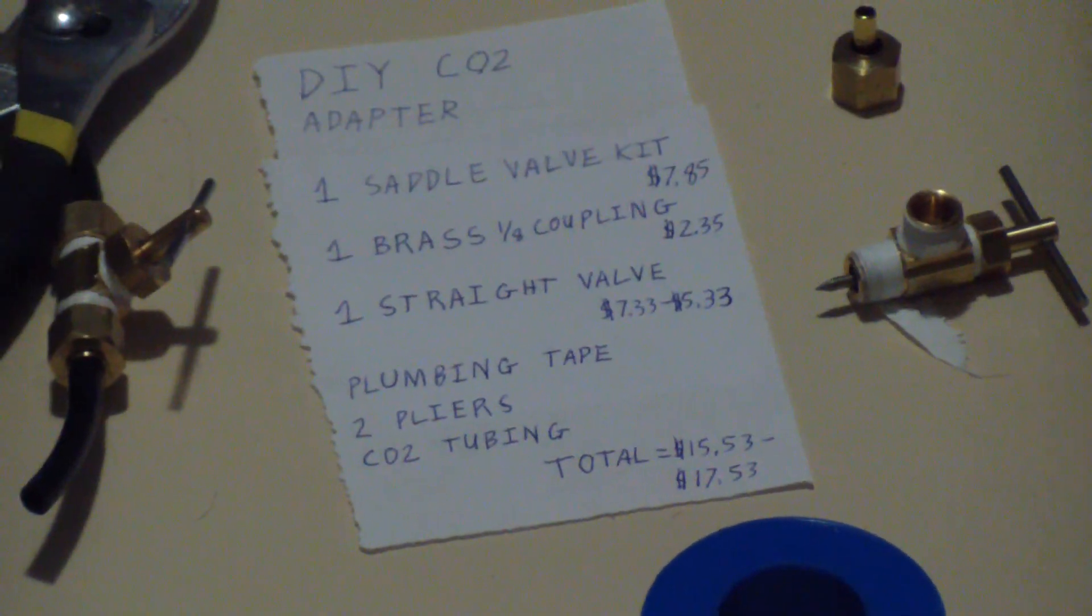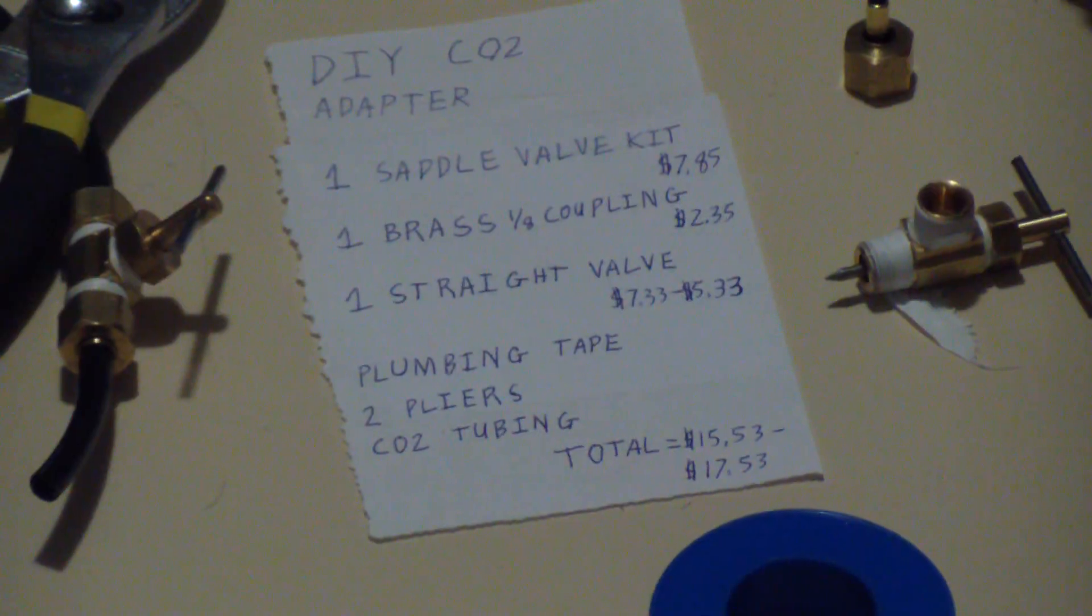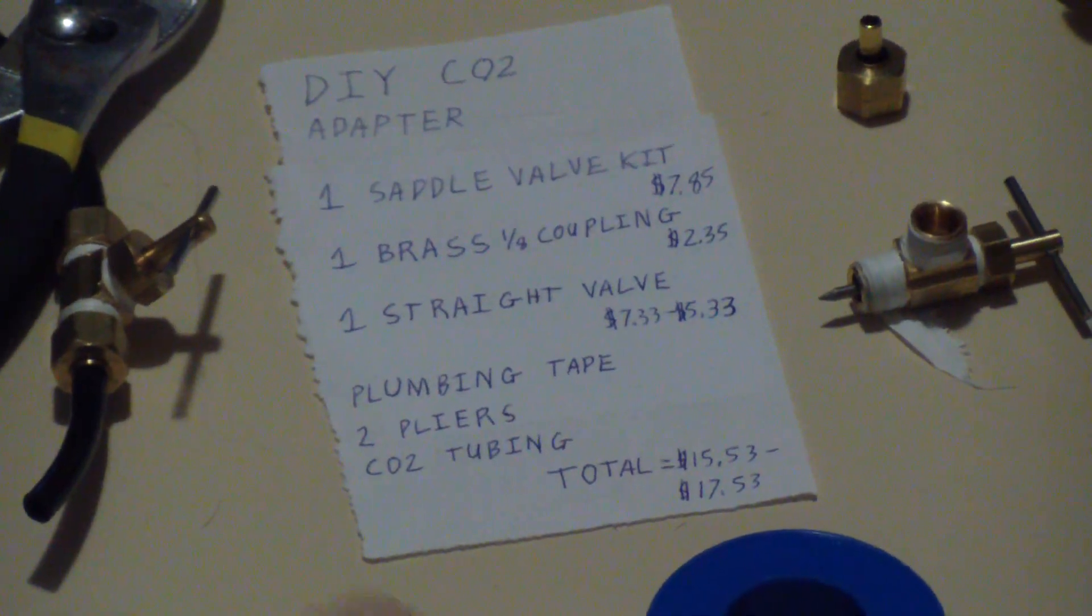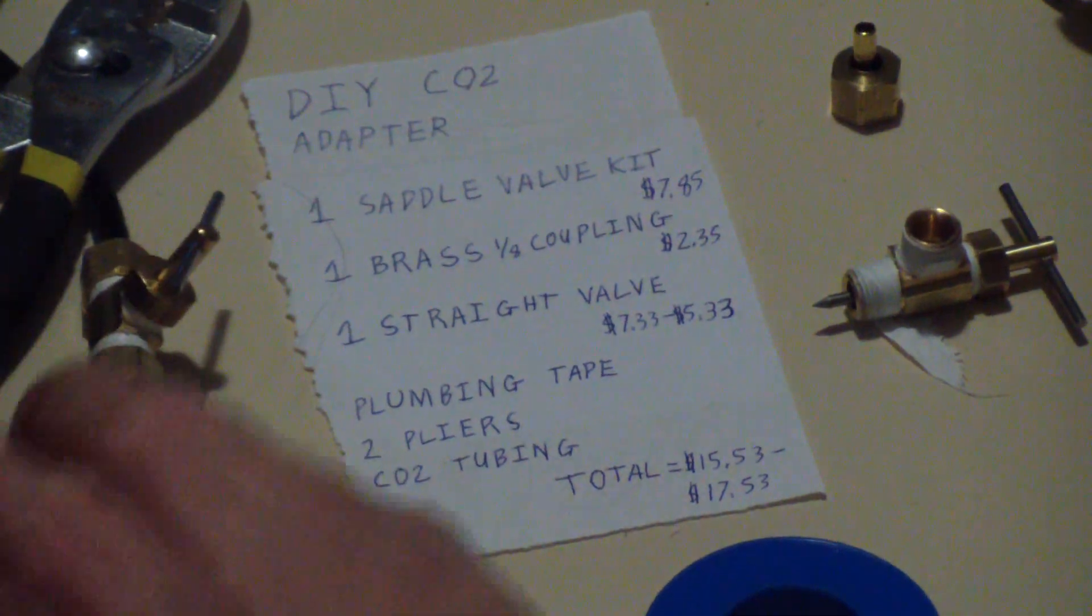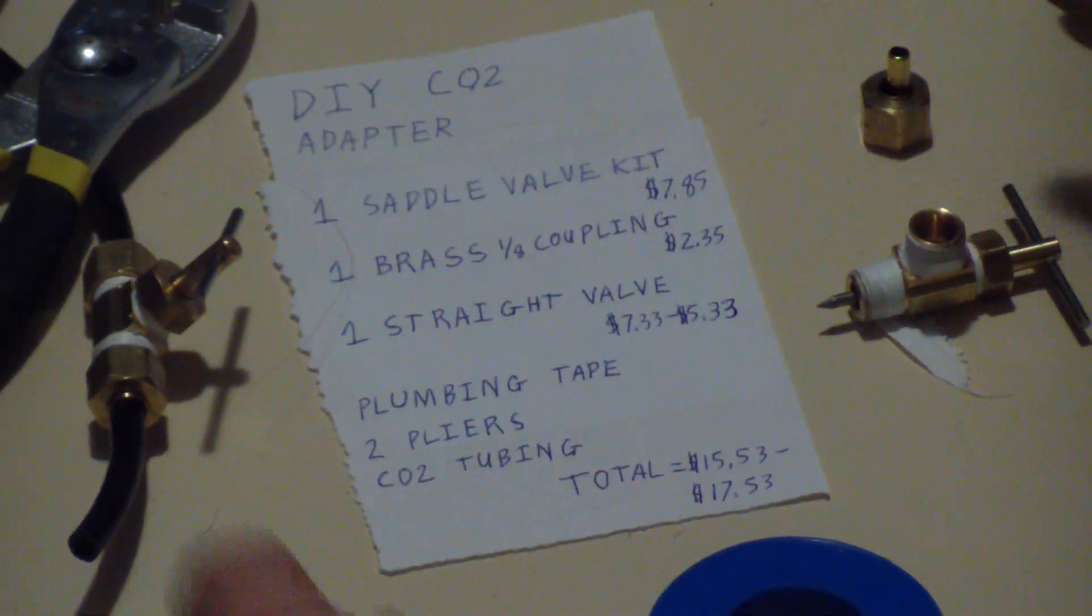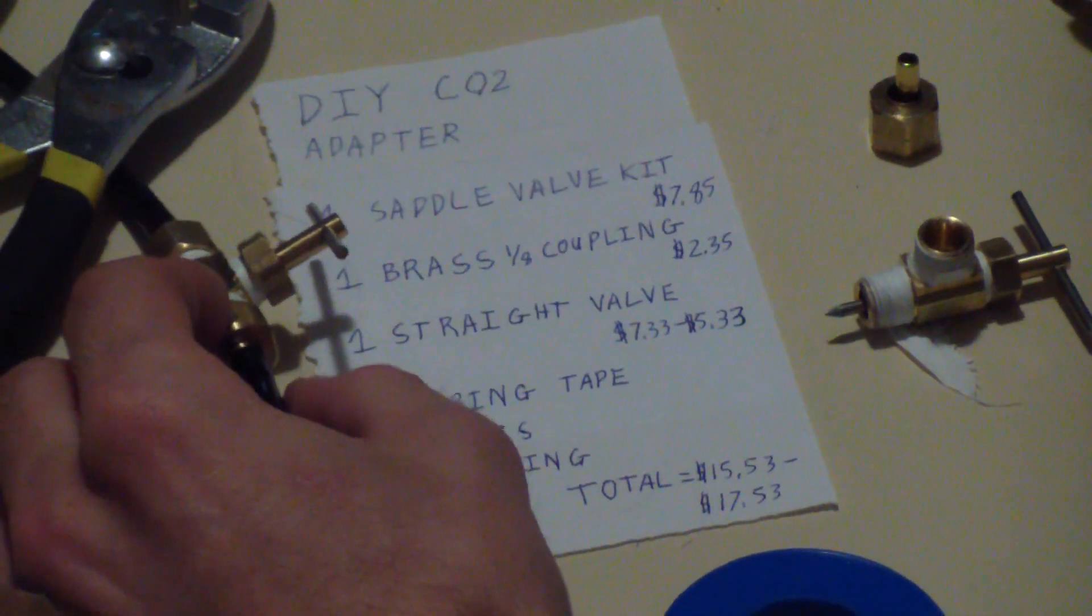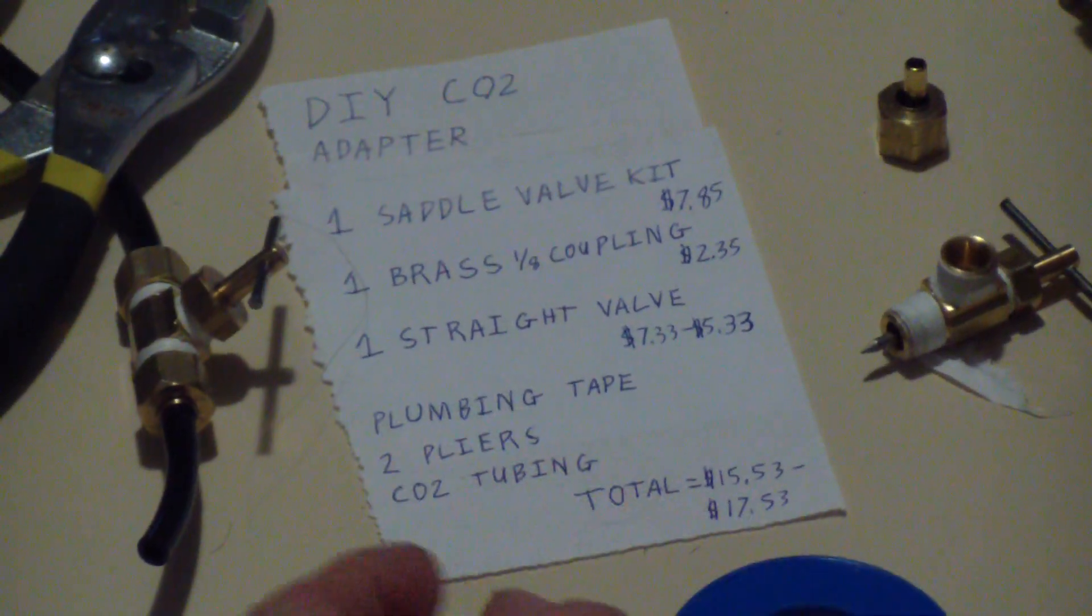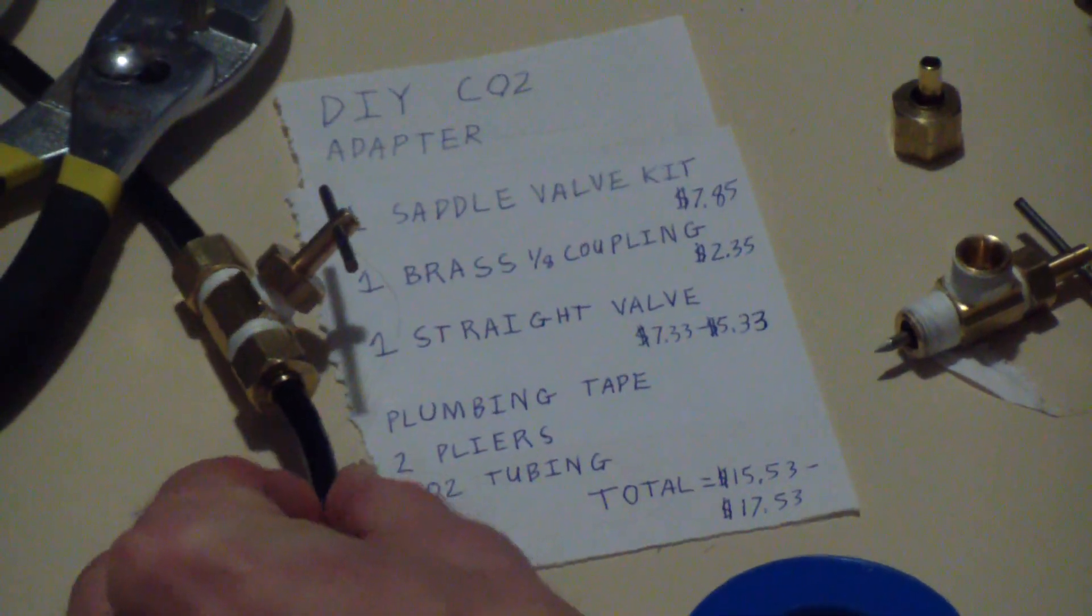You'll need a brass coupling to adapt from the cylinder to your valve, a straight valve for a shut-off which will also come with two of these, and because these are compression fittings on both sides, you'll need a little piece of CO2 hosing to go in between.